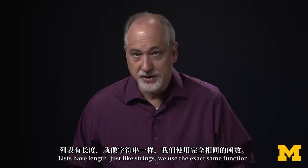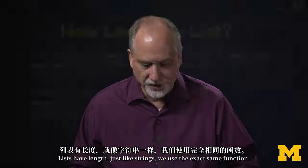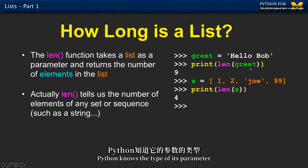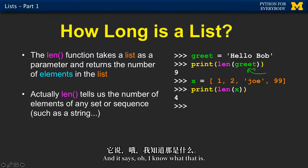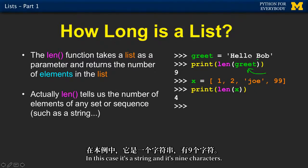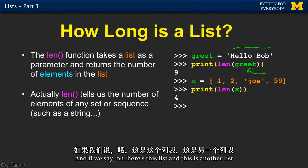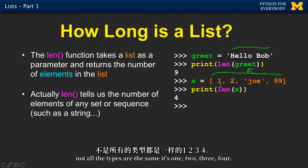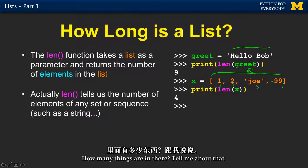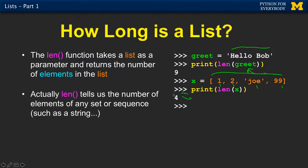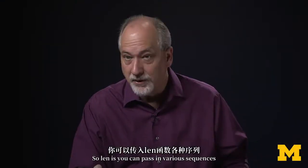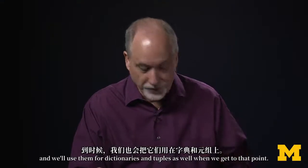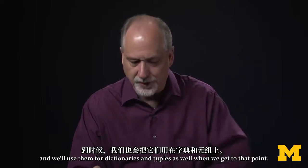Lists have length, just like strings, and we use the exact same len() function. Python knows the type of its parameter and the length of the thing it's looking at. In this case it's a string and it's nine characters. If we have a list where not all the types are the same — 1, 2, 3, 4 — there are four things in there. You can pass various sequences into len(), and we'll use it for dictionaries and tuples as well.